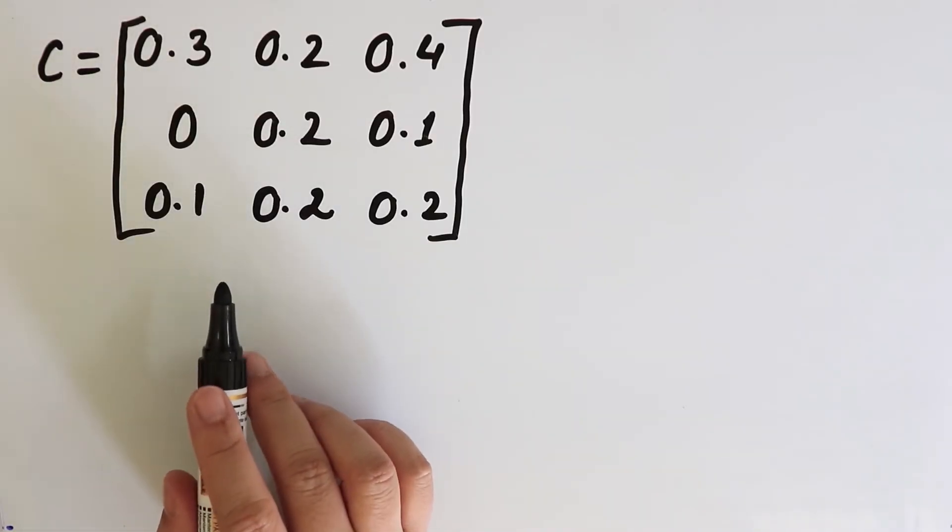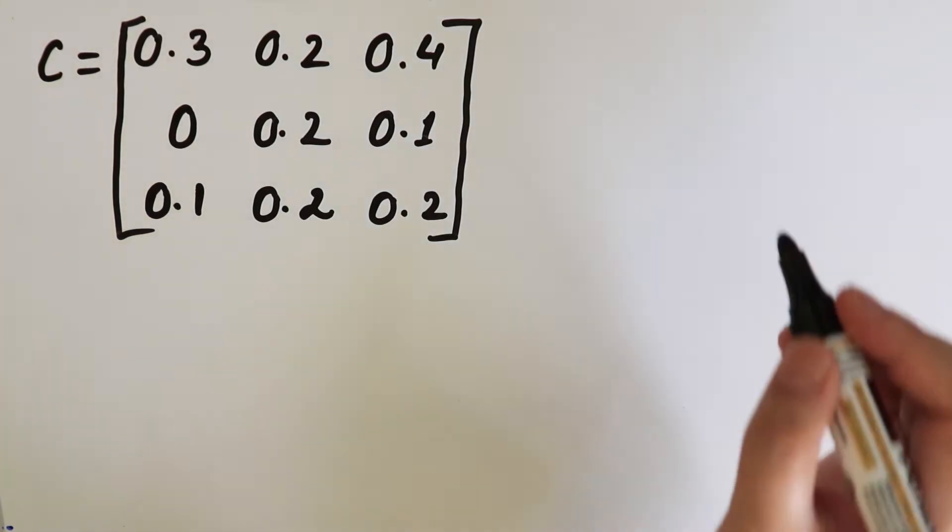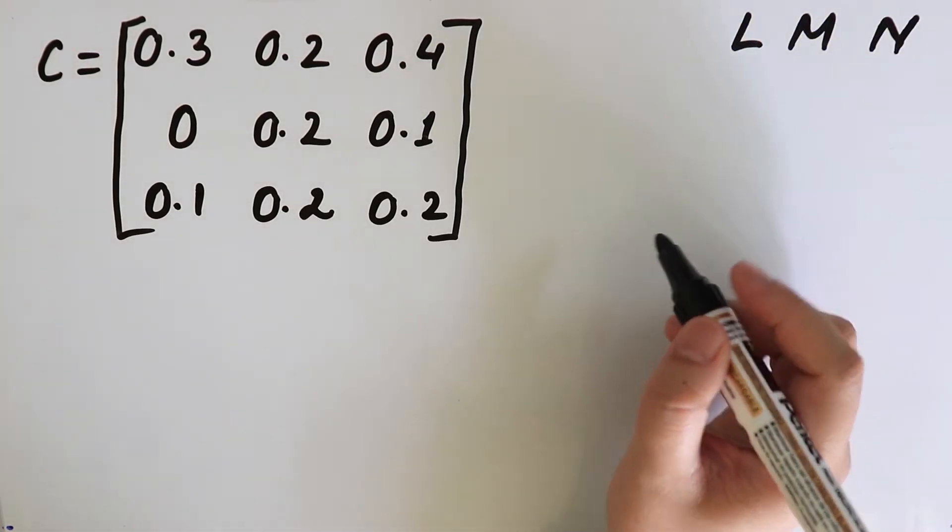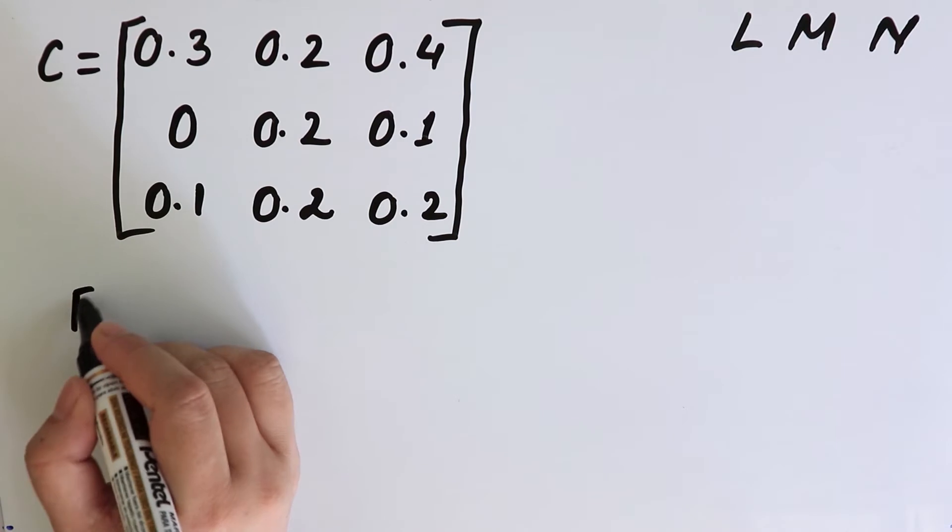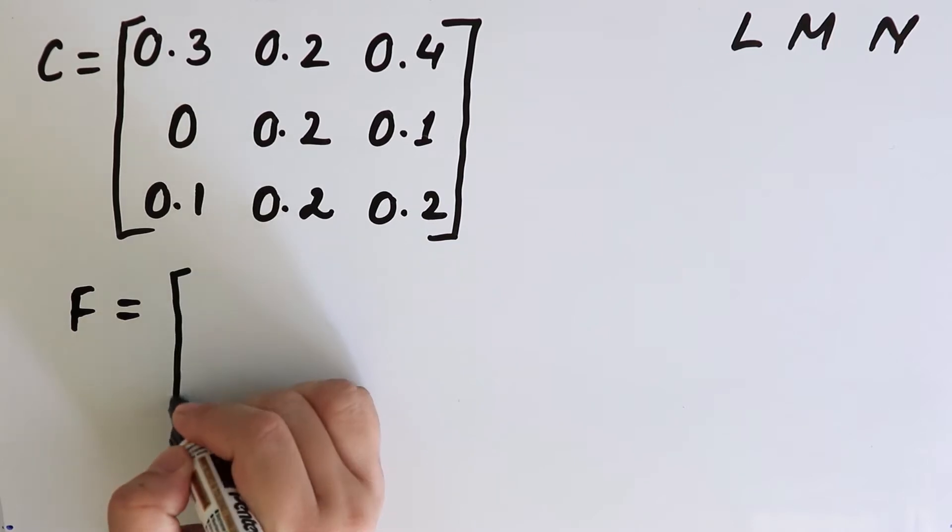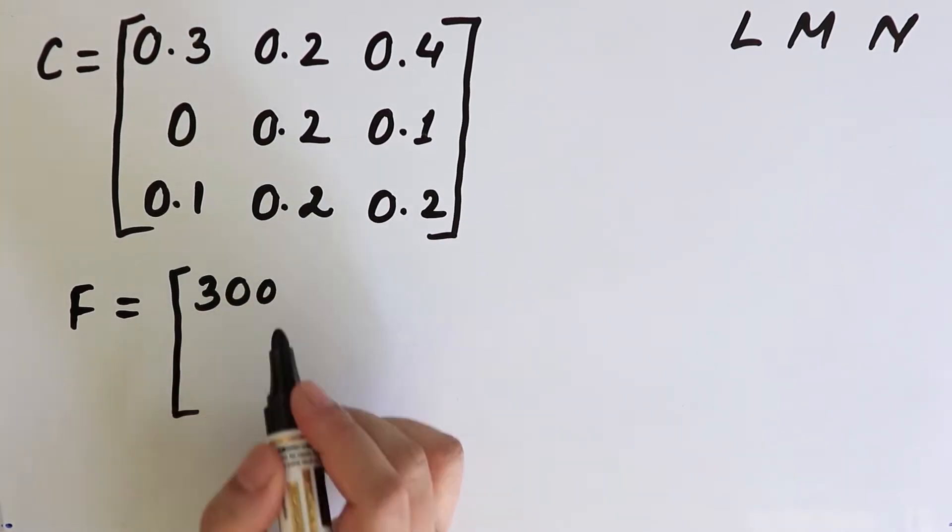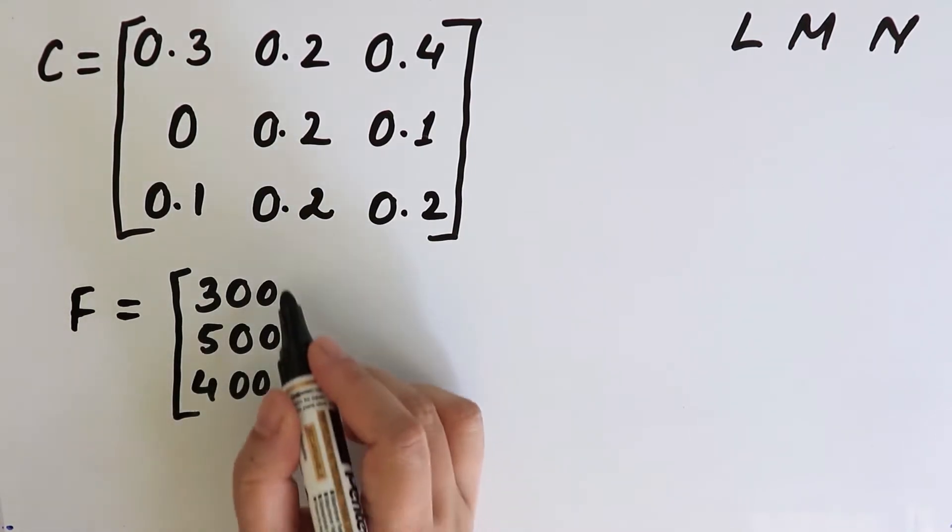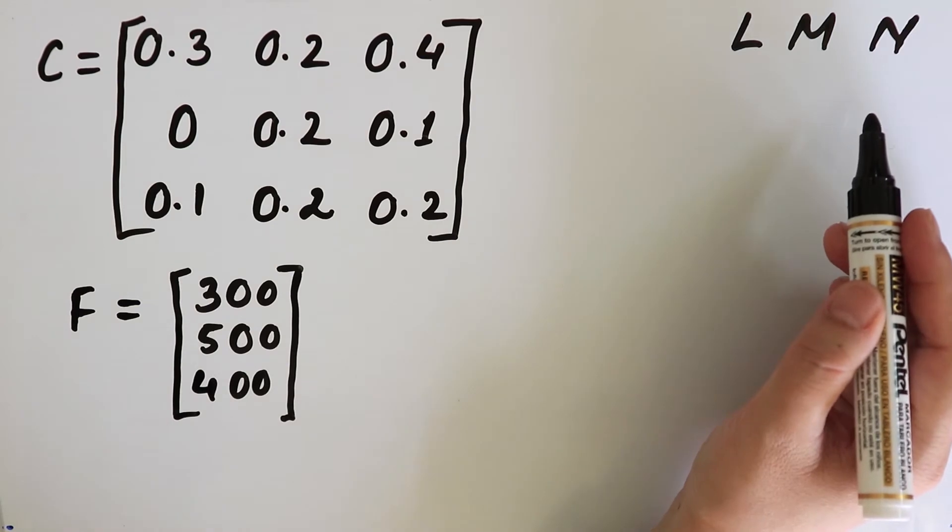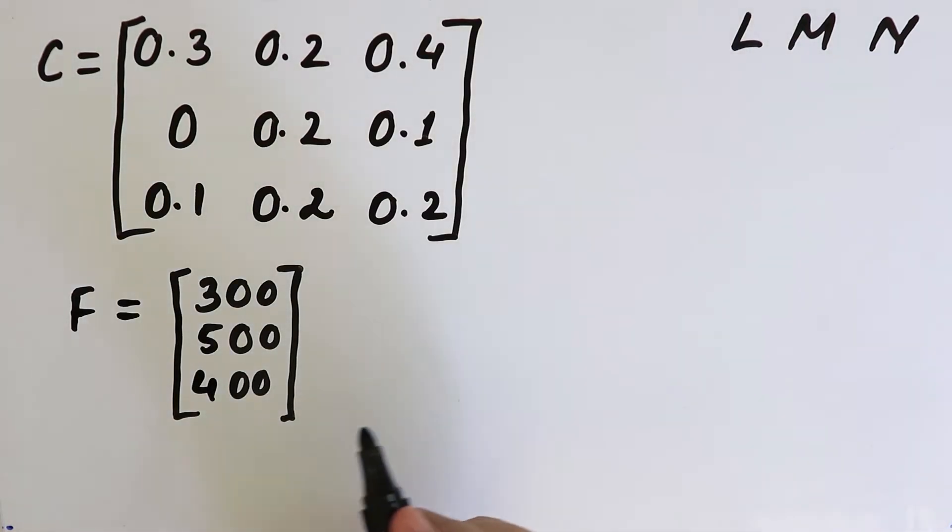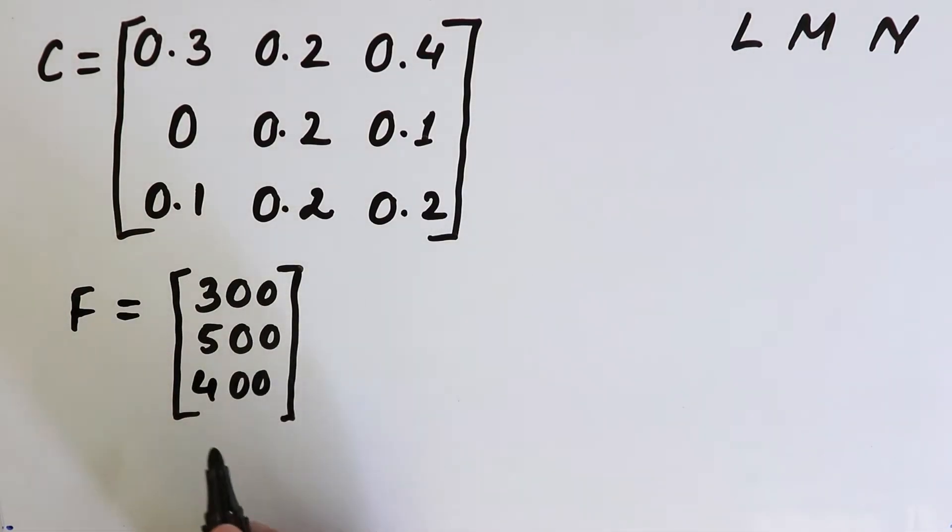This is an input coefficient matrix for three industries L, M, N. Suppose F is a vector of final demand for the three industries and it is given by 300, 500, and 400. Let L, M, and N be the output of industry L, M, and N respectively that needs to be produced to meet the intermediate and the final demand.